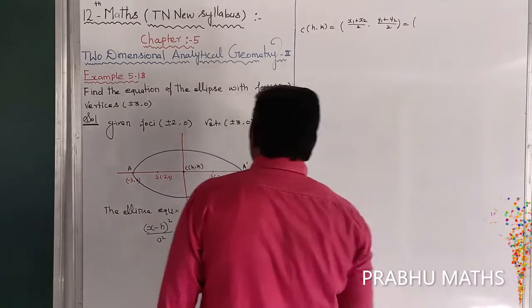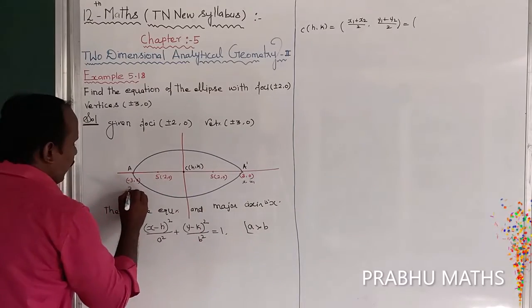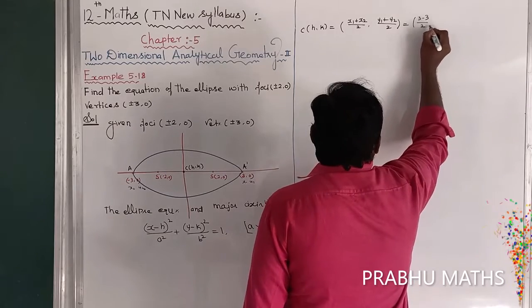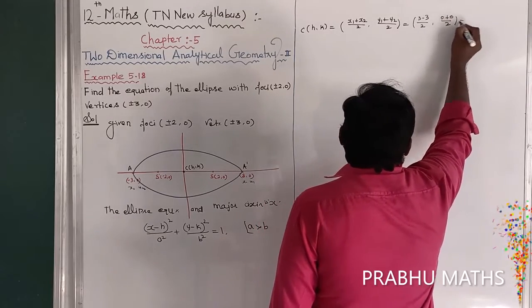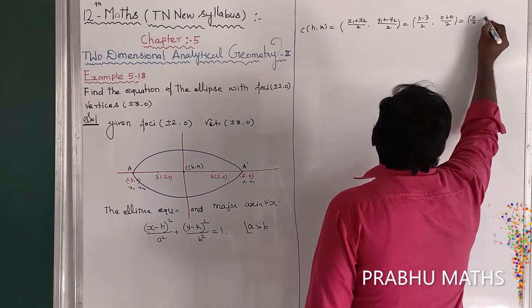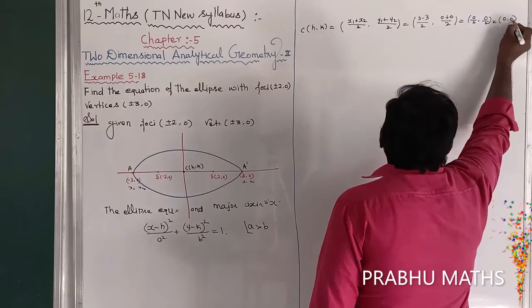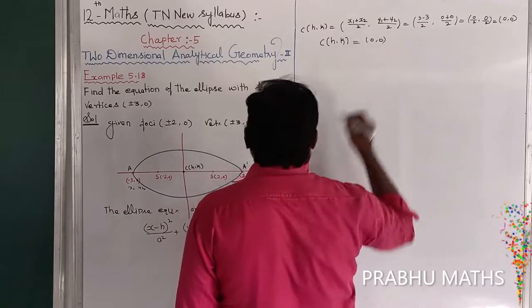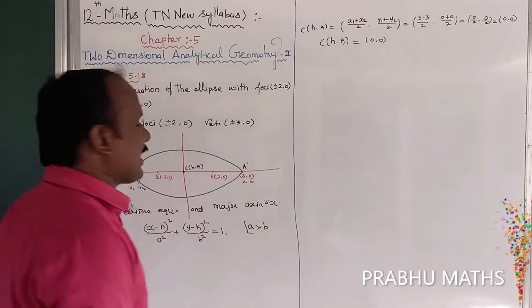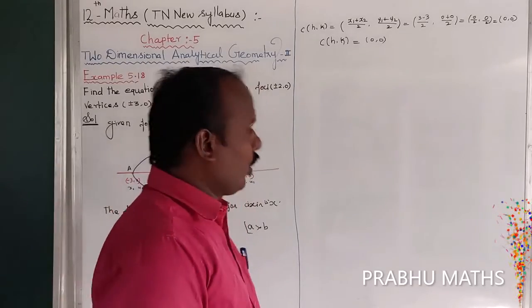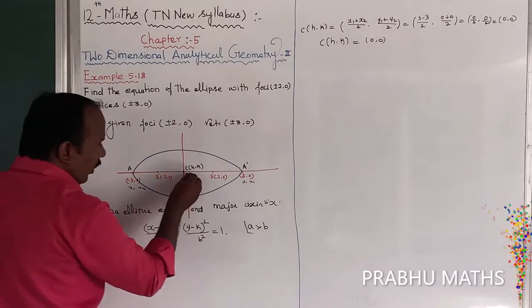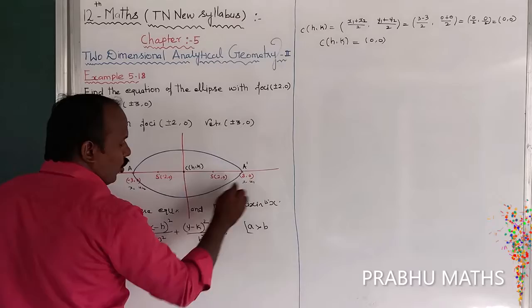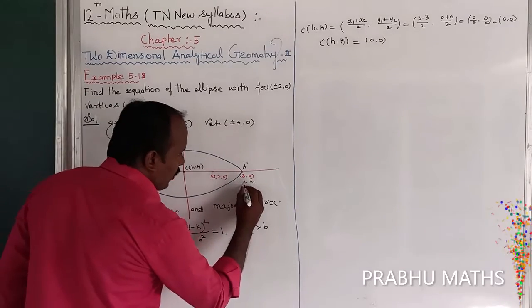The a value means the vertex is at (a, 0) and the other vertex is at (−a, 0).